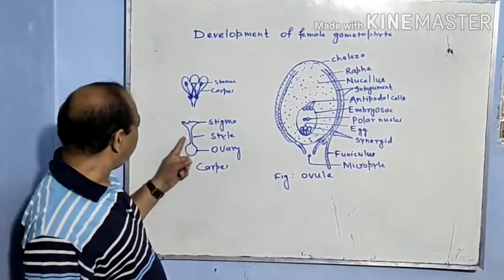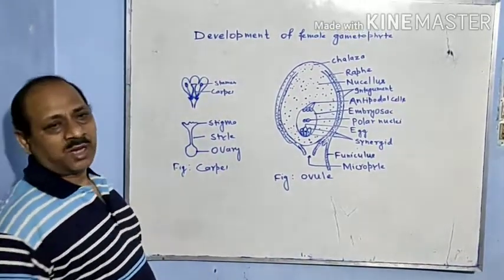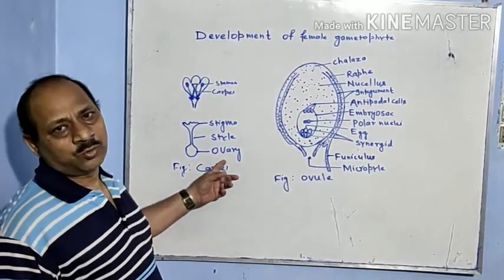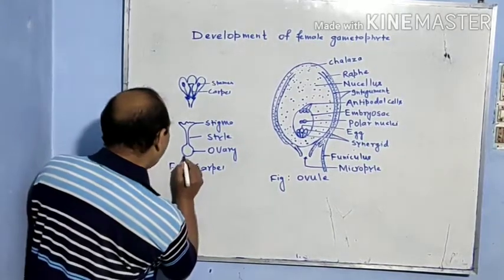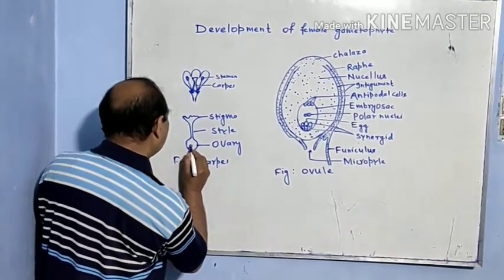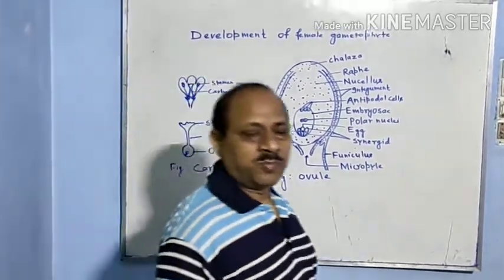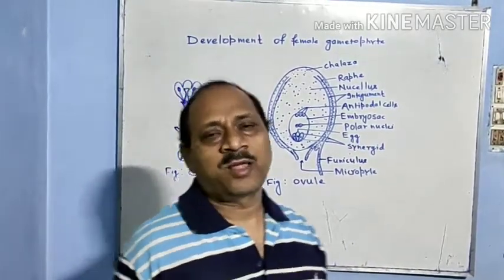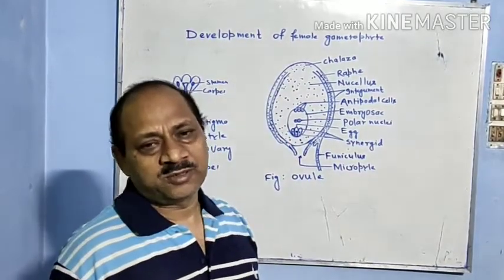The middle filamentous part is known as style, and the lower swelling part is known as ovary. The ovary is attached with the wall of the ovary with the help of placenta.